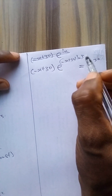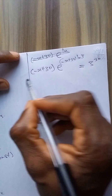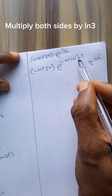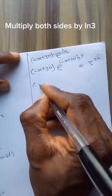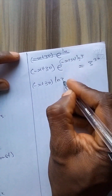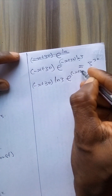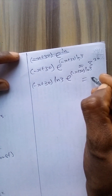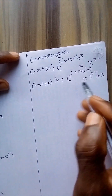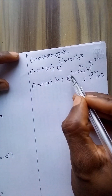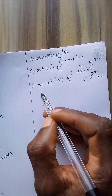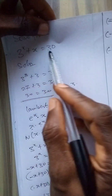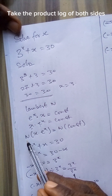One thing still remains — we need ln throughout the equation. So we multiply both sides by ln 3, giving: minus x plus 30 times ln 3, times e to the power of minus x plus 30 times ln 3, equals 3 to the power 30 times ln 3. Now we have the expression in the required form, so we can confidently take W of both sides.